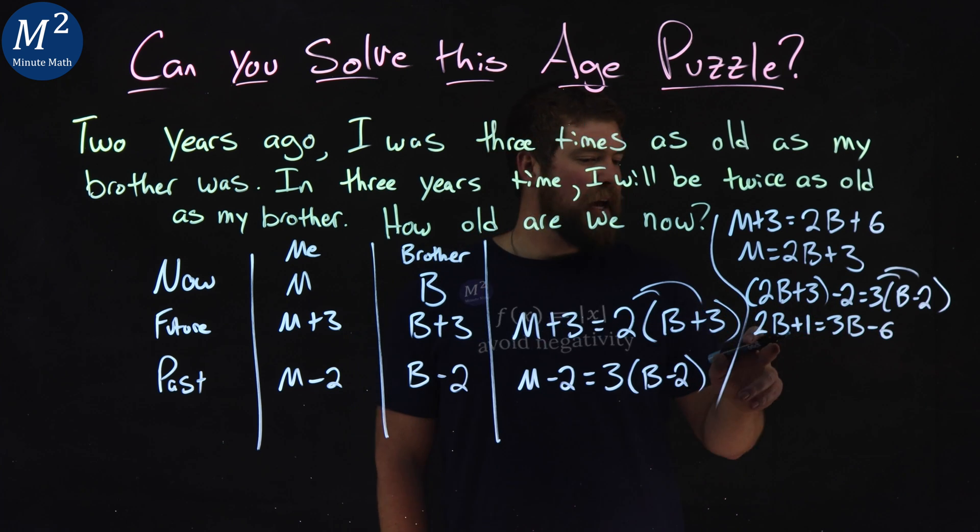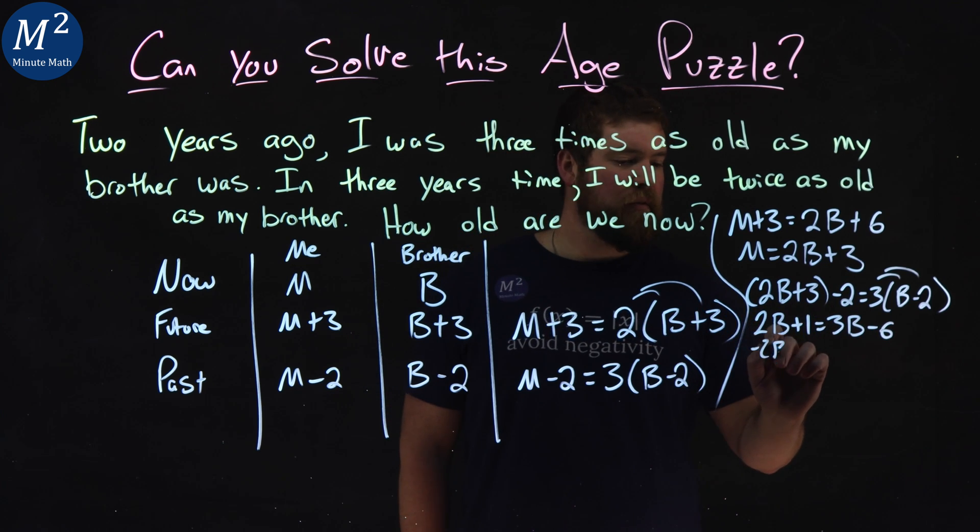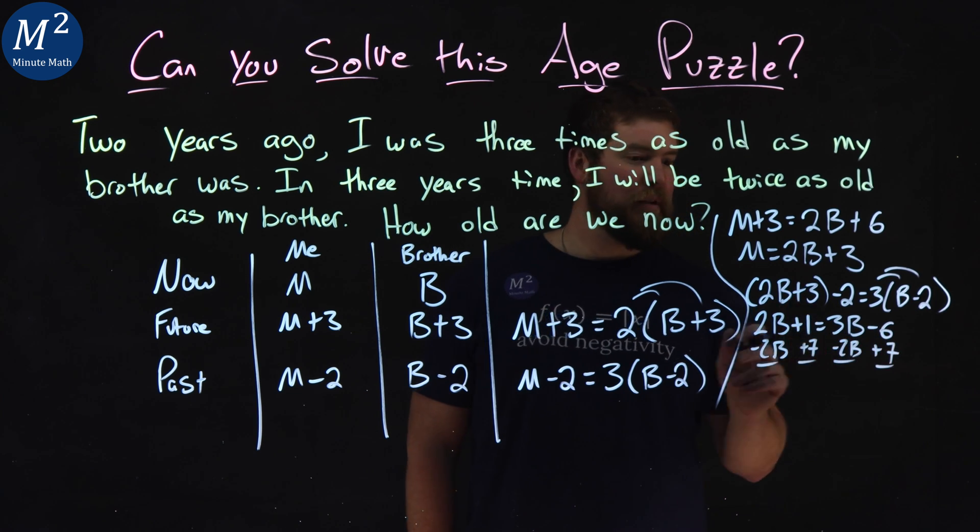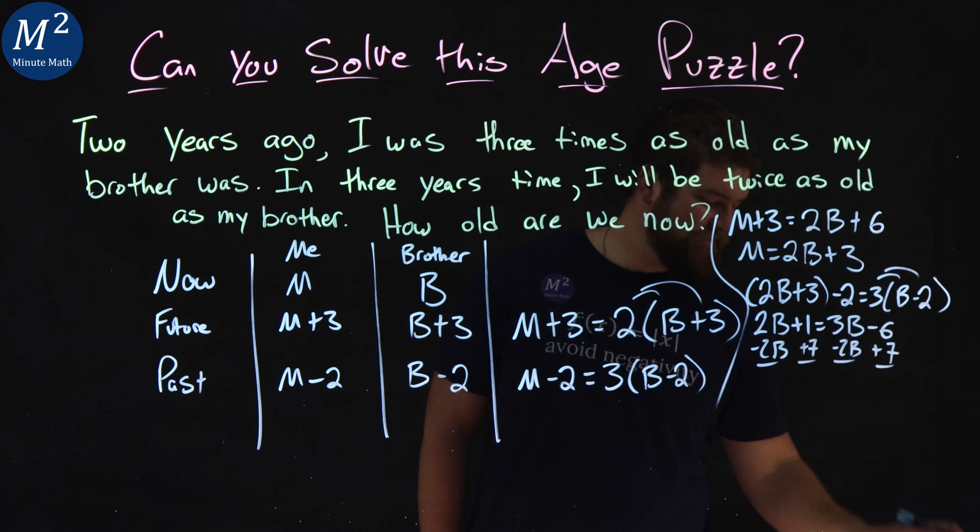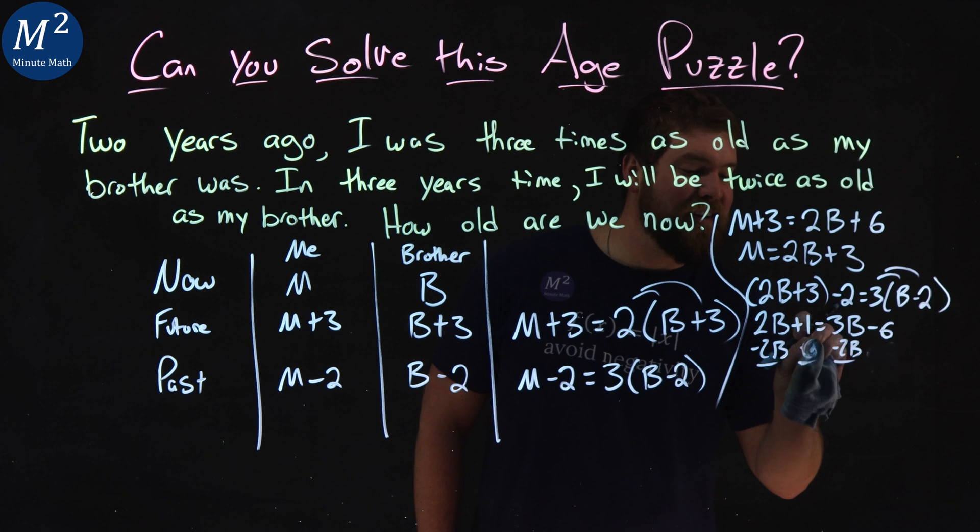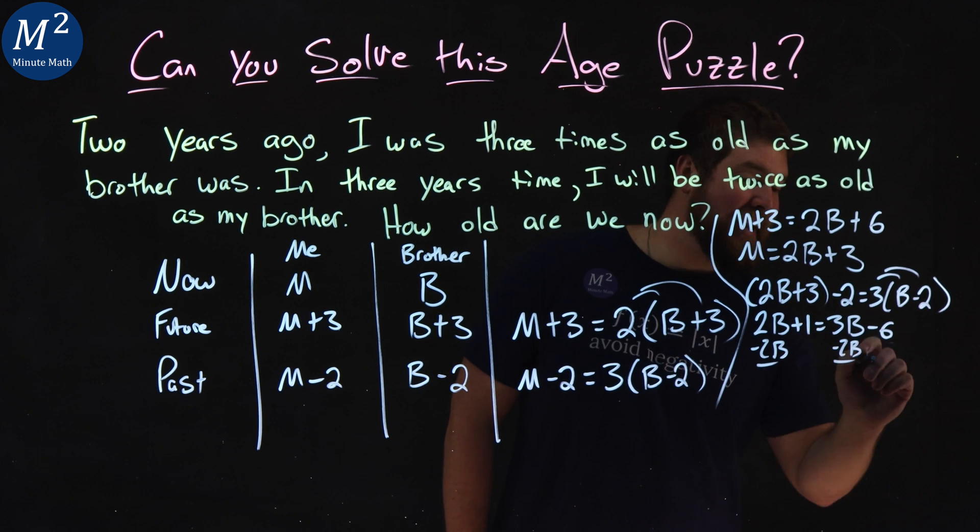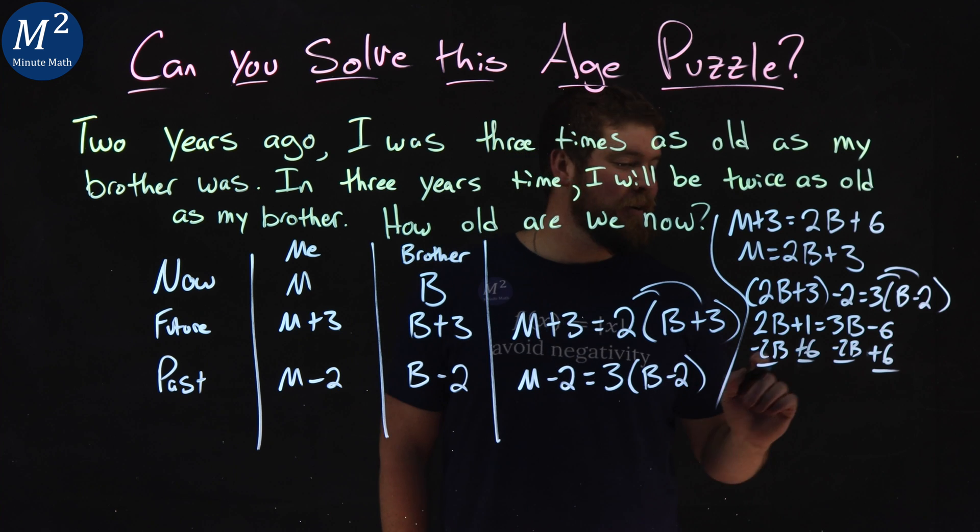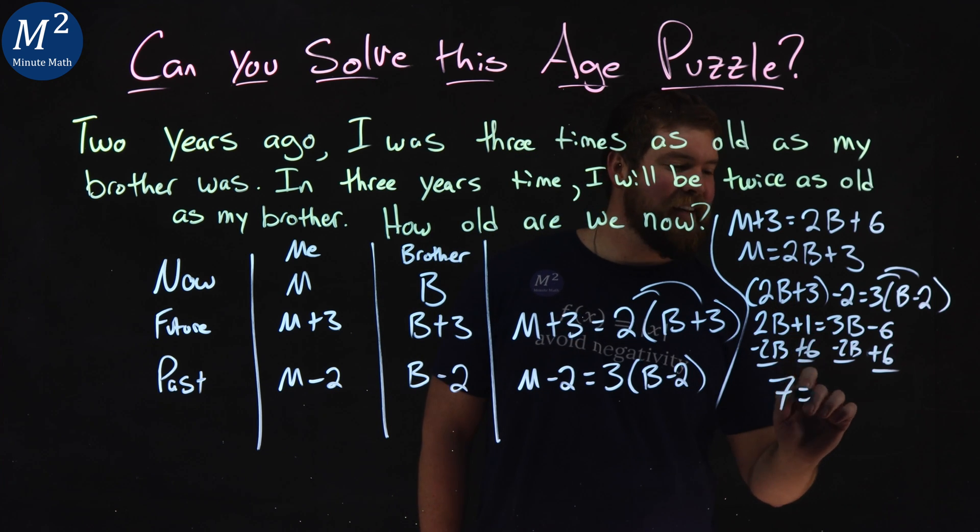Get our B's together, subtract two B from both sides. We add six to both sides right here, and one plus six is - oh sorry, not seven. Hey, we all make mistakes. I was jumping the gun. At least I caught it now, not at the end of the video. One plus six is seven equals three B minus two B is one B, B.